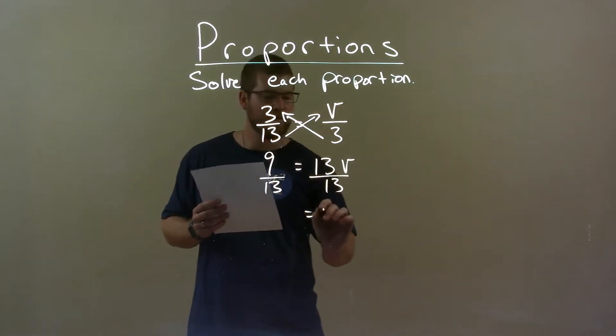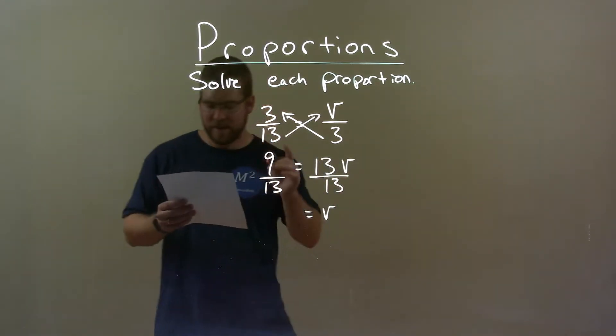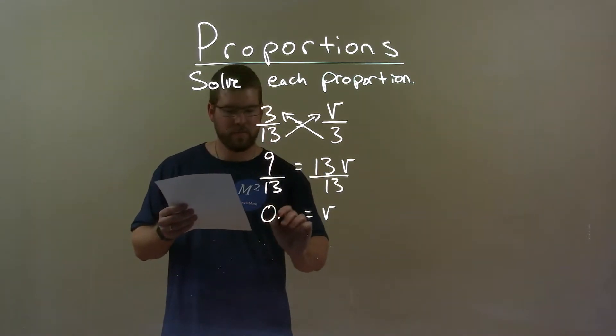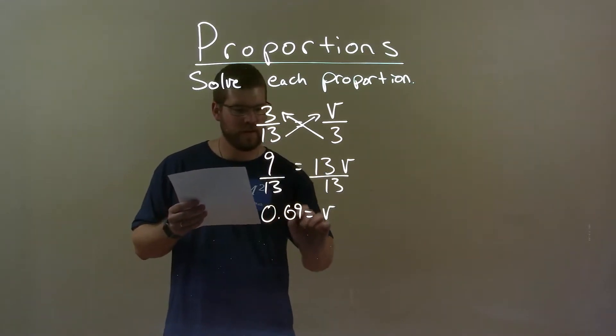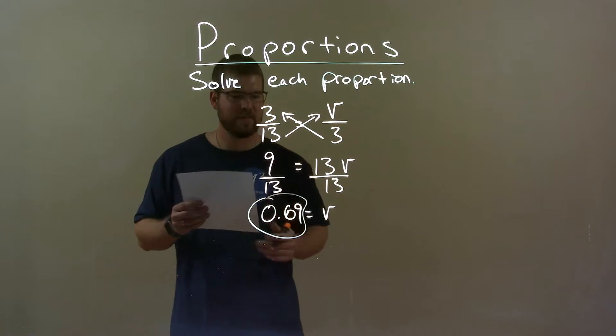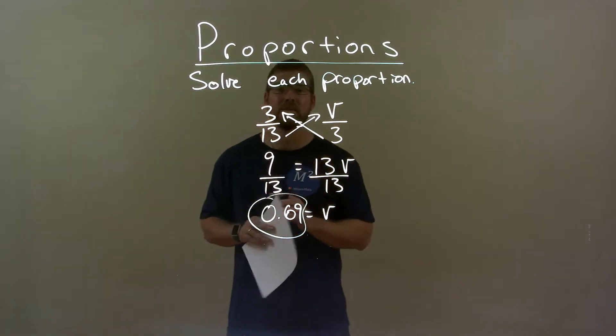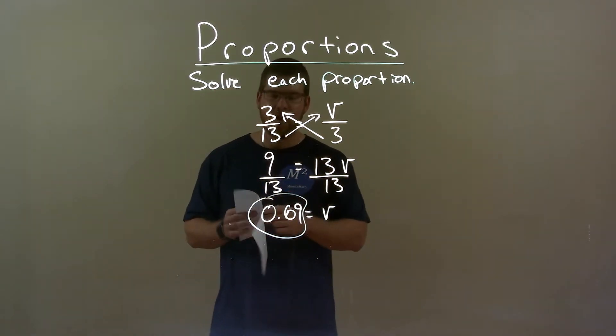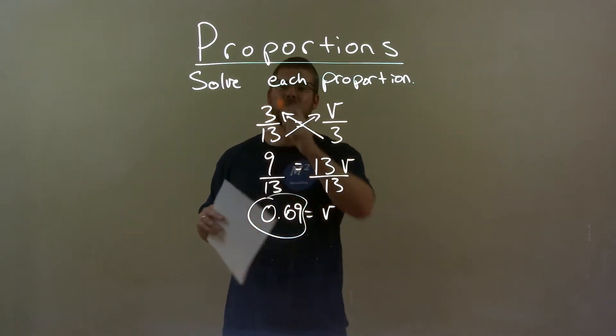v is by itself, and 9 divided by 13 is 0.69, so our final answer is 0.69. Quick recap — we're given 3 over 13 equals...